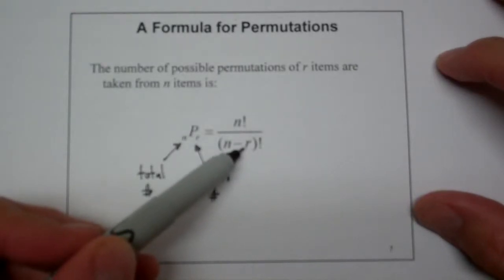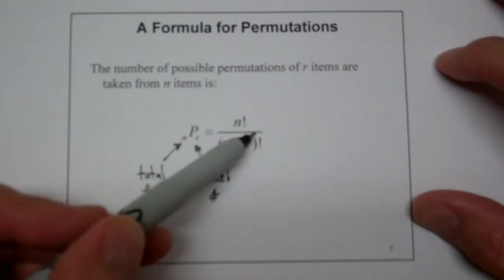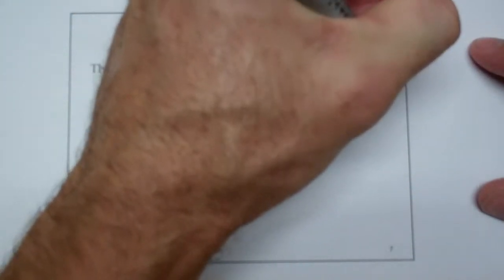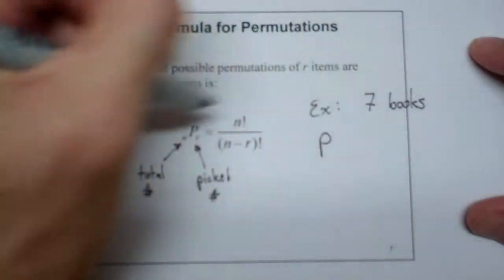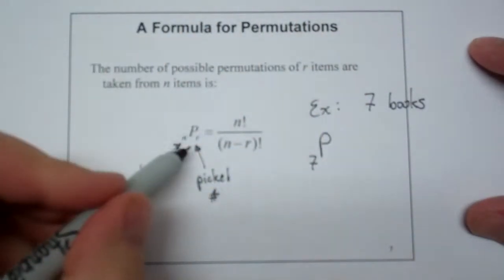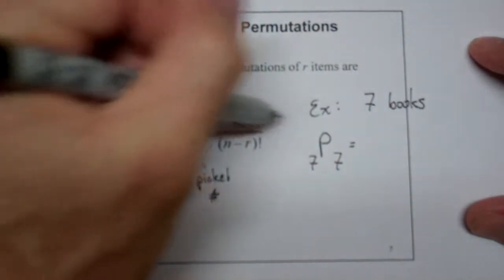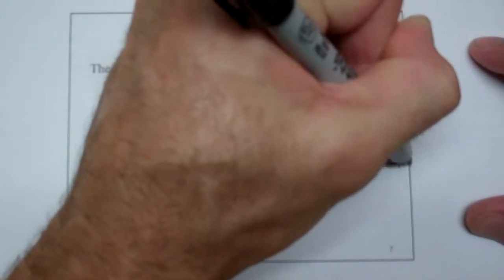Obviously, when you pick them all, right, in the case of the 7 books, I had 7 factorial over 7 minus 7 is 0, and the 0 factorial, now you can see that, right? So here's my little example of the 7 books. And we picked all 7 of them. So my n is going to be 7, and the number that I picked is going to be 7. And so I'm going to have 7 factorial all over 7 minus 7 factorial.